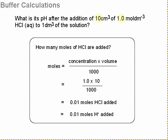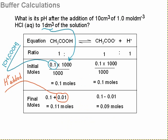Let's have a look at the actual quantities involved. How many moles of HCl are added? It's 10 centimetre cubed of one molar, so the concentration times volume over 1000, 1 times 10 over 1000, is 0.01 moles of HCl acid. Because it's a strong acid, that means 0.01 moles of H plus have been added.